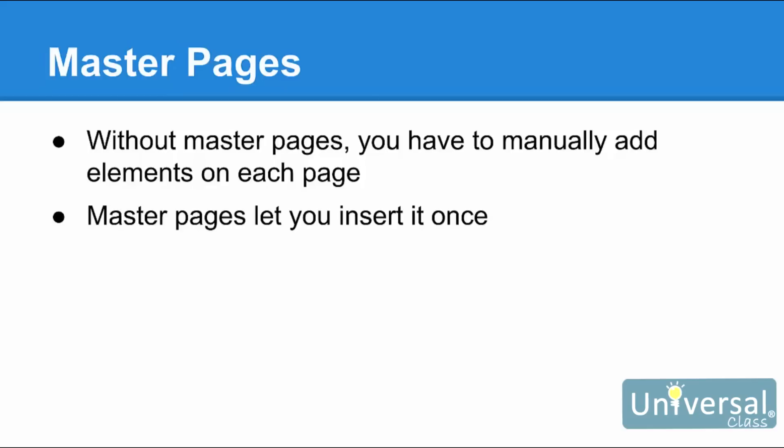Without master pages, you would have to manually enter all of these elements onto every page, which is a very time-consuming, labour-intensive process. Even worse, you'd have to reformat each element and position it precisely. With master pages, you can insert the element only once, and choose which pages you want that element to appear on. Some common elements used in master pages include page numbers, headers, and footers, but you can also add text boxes, artwork, and custom watermarks. By default, Microsoft Publisher 2016 automatically includes one master page every time you create a new publication, but you can easily add more.